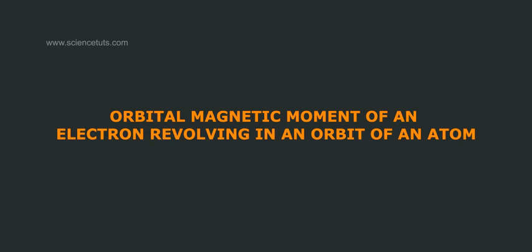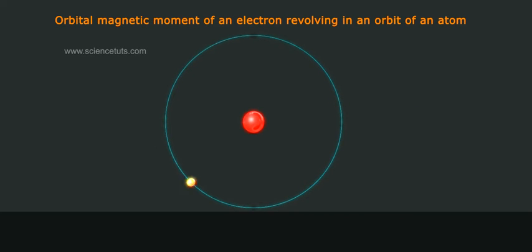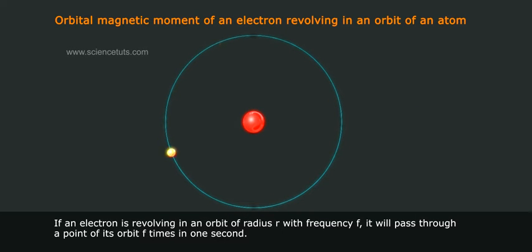Orbital magnetic moment of an electron revolving in an orbit of an atom. The magnetic dipole moment of the loop of area A carrying current I is given by M equals IA per turn. If an electron is revolving